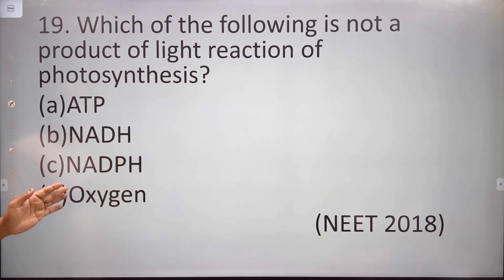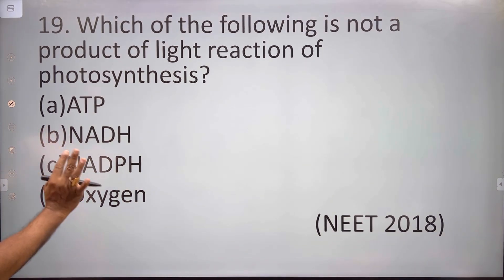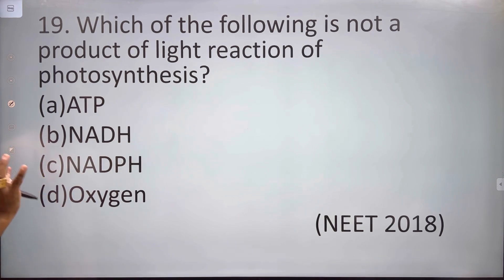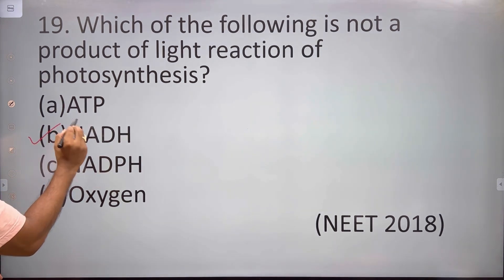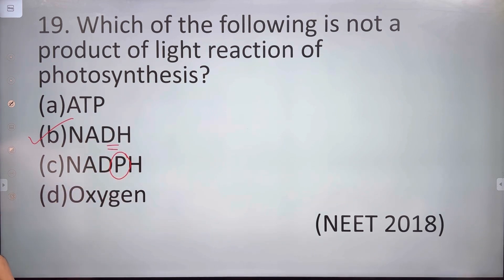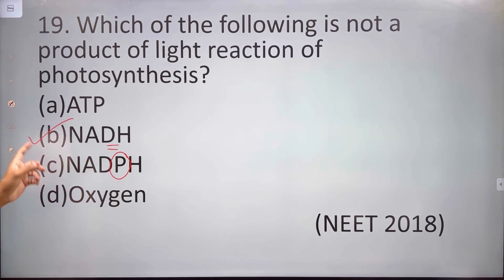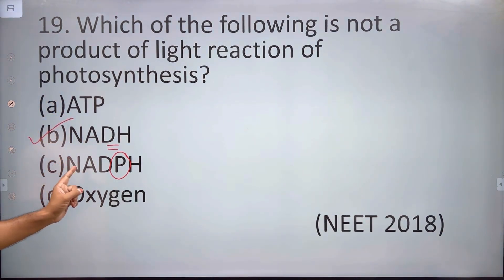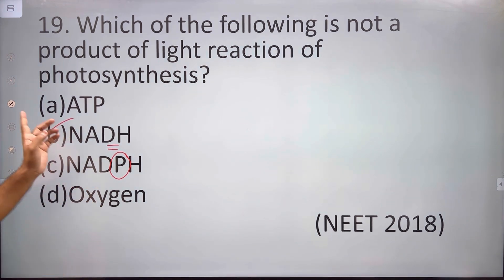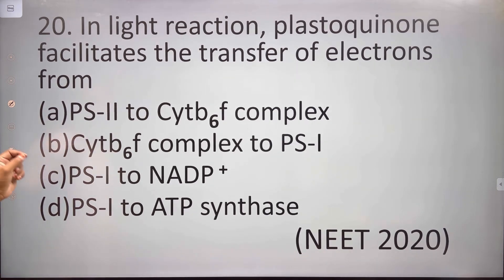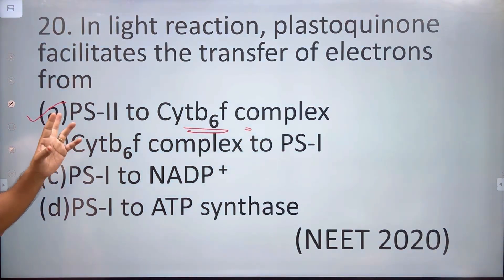Which of the following is not a product of the light reaction of photosynthesis? ATP and NADPH are produced, as well as oxygen. Plastoquinone facilitates the transfer of electrons from PS2 to the cytochrome B6F complex — it is the electron carrier in the light reaction of photosynthesis.